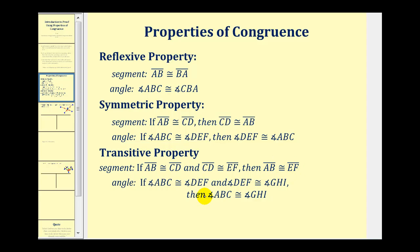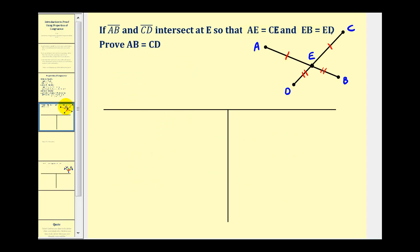We can do the same with angles. Let's take a look at our first example. If segment AB and segment CD intersect at point E, so that AE is equal to CE — they both have one hash mark — and EB is equal to ED — these both have two hash marks.